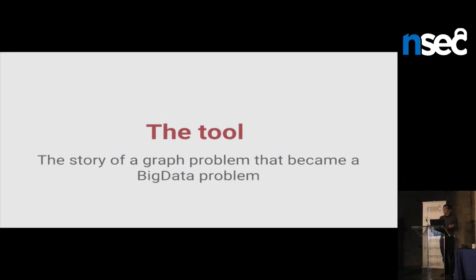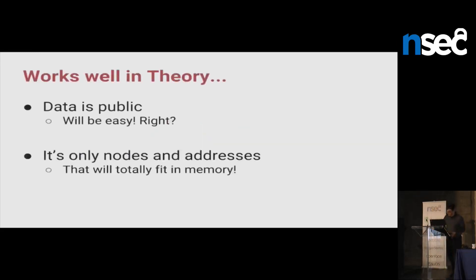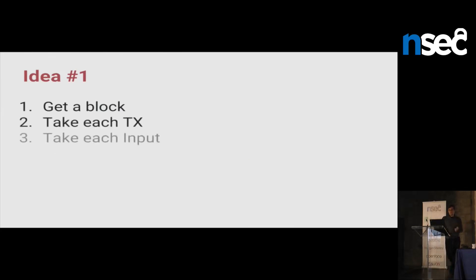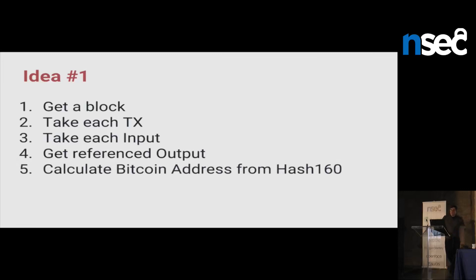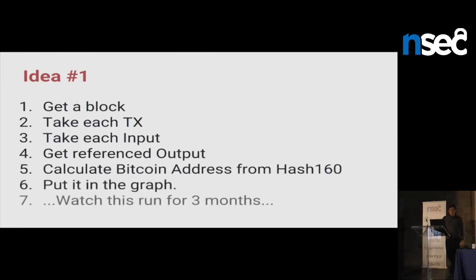Now the fun part — the tool. I came with a graph problem and thought it would be really complex. And finally the graph problem took me a day, a day and a half. But the big data problem took me until last week to figure out. It works well in theory. The data is public — you can download the whole blockchain from the internet. It's easy, it's public, and it's only numbers in memory — just an array of bytes and integers. That will totally fit in memory. Well, I was wrong. Idea number one: get a block, take each transaction, take each input, get the referenced output to get the hash160, calculate the Bitcoin address, put it in the graph. And then watch this run for three months. Tables flipped.